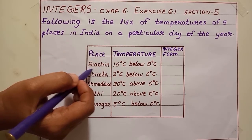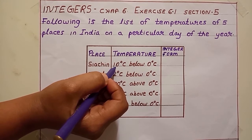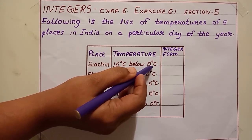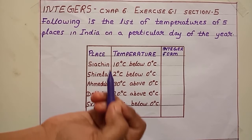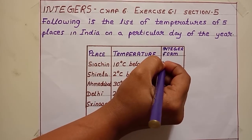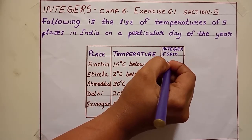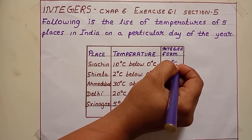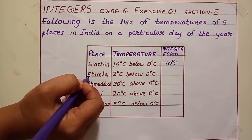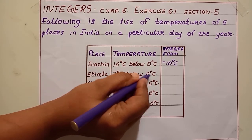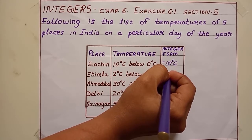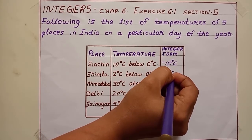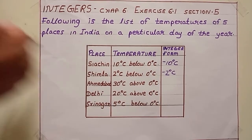So Siachin — they have given 10 degree Celsius below 0 degree Celsius. We know if the reading is going below, then the sign will be negative. So I can write here as minus 10 degree Celsius. Shimla: 2 degree Celsius below 0 degree. Below means again negative — minus 2 degree Celsius.